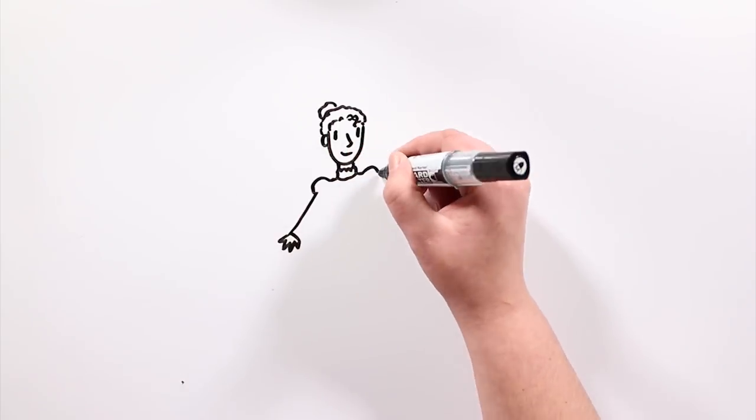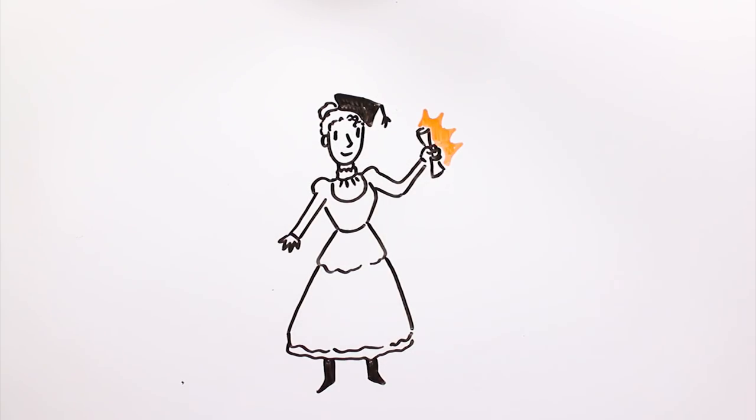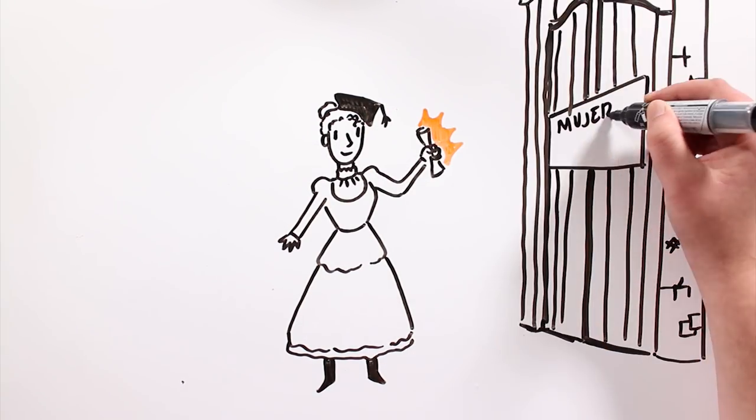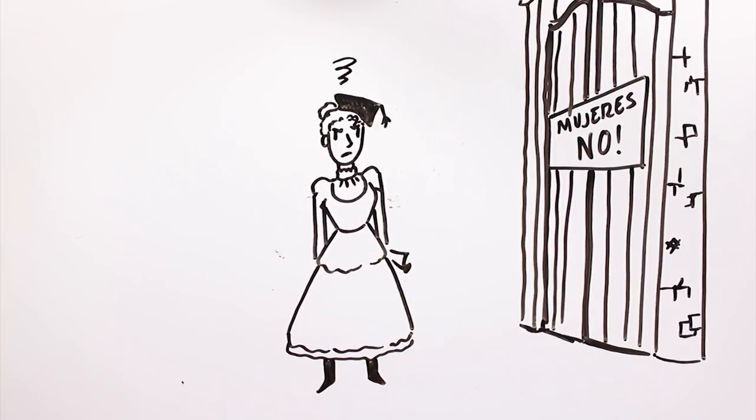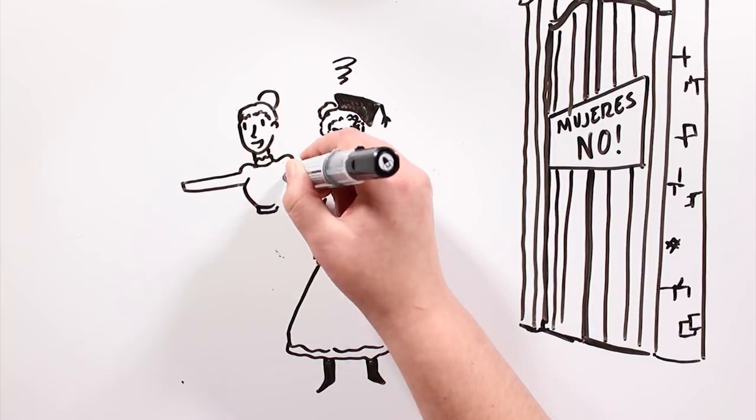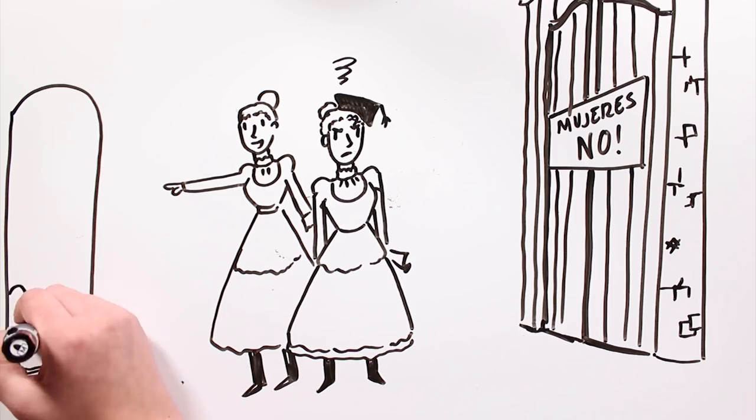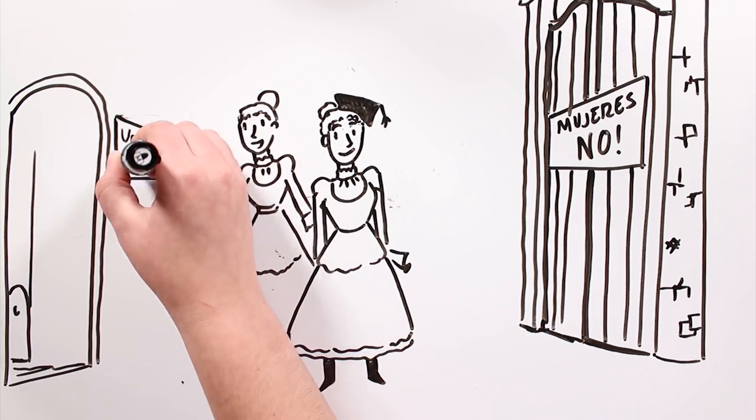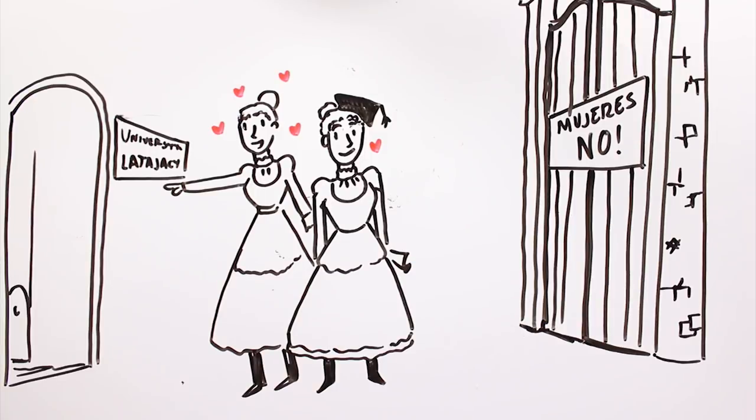Maria graduated with excellent grades, and when the moment came for her to continue with her higher education, she found that she couldn't register because she was a woman. Decided to continue studying, she enrolled, along with her sister Brunislava, in a clandestine university that admitted female students.